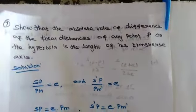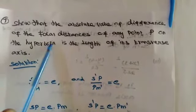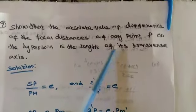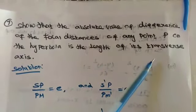Question number 7: Show that the absolute value of difference of the focal distance of any point P on the hyperbola is the length of transverse axis.